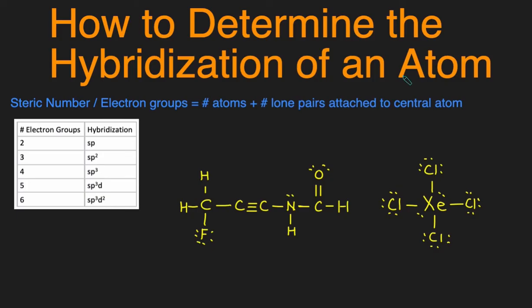The very first step is to draw the Lewis structure. If you're unfamiliar with how to draw the Lewis structure of a compound or an ion, just check out my video about how to do that. Once you have the Lewis structure, you just take a look at the central atom or whatever atom is designated.